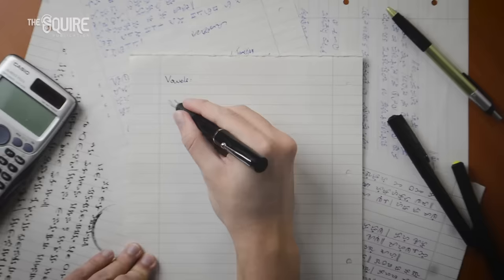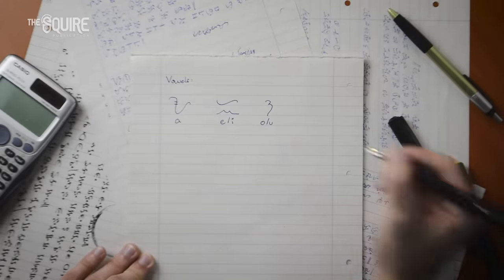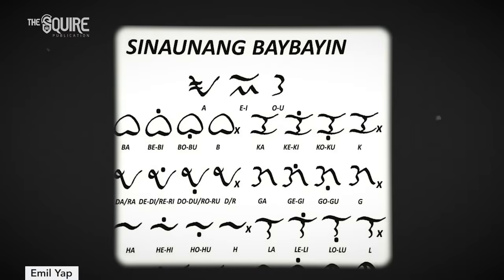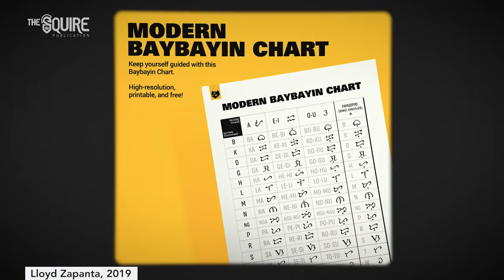For the vowels, you have A, E or I, and O or U. If you've looked into Baybayin before, you might notice that these aren't exactly the same as the ones you'd see online, but that's just because the script isn't perfectly standardized yet.